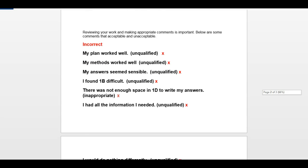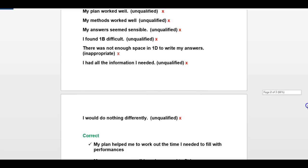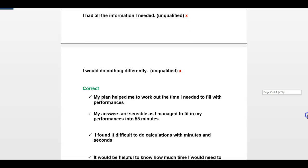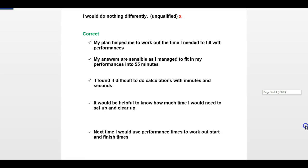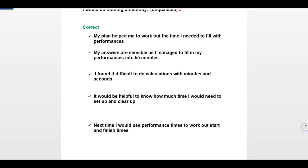Just to give you an example of some answers that you will get marks for here. So you can put things like my plan helped me work out the time I needed to fill with performances. So basically how well your plan worked and then why it worked. Again here, my answers are sensible and I managed to fit my performances into 55 minutes. So it's basically justifying why your plan worked and how effective it was.